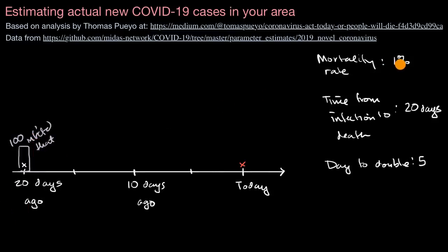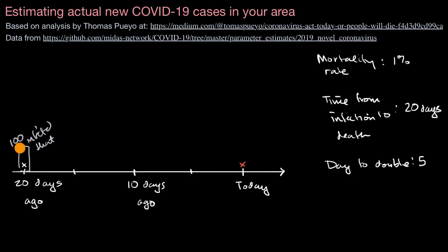If we assumed a 0.5% mortality rate, then we would say there might have been 200 people infected that day, 0.5% of whom reach death 20 days later. If you assume a 5% mortality rate — which is a very unfortunate situation but one we are seeing in different parts of the world — then maybe there were only 20 people infected that day. When you only have one or two or three deaths in a region, that makes estimates more difficult. But as we unfortunately see larger numbers of deaths in various regions, these backward estimates become more and more reasonable.